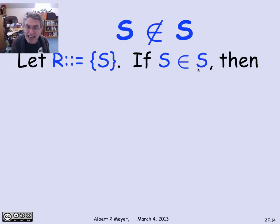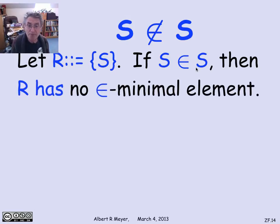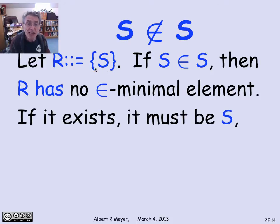Now suppose s is in s. We're going to reach a contradiction. The claim is that r has no membership minimal element, which violates the foundation axiom. So you can't have s as a member of s. Why? Well, r is supposed to have a membership minimal element. R has only one element, so if it has any membership minimal element, it must be s.